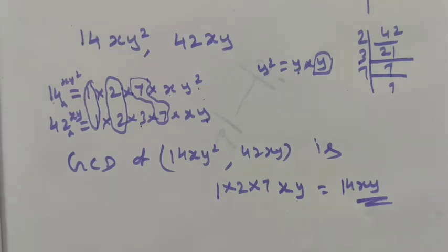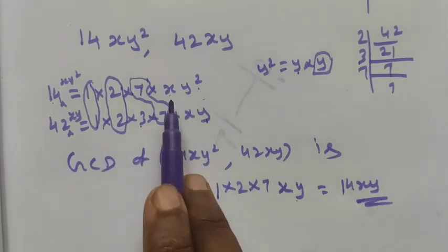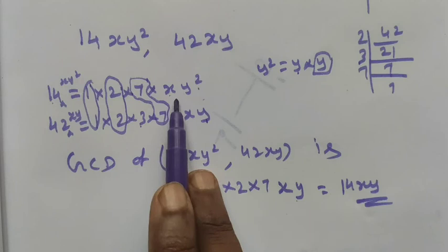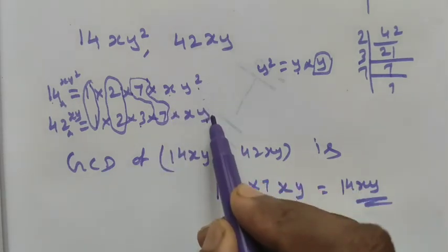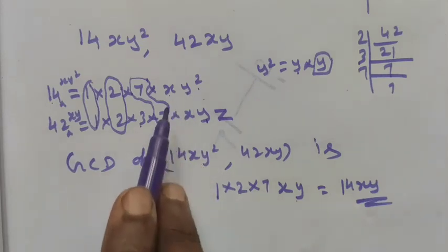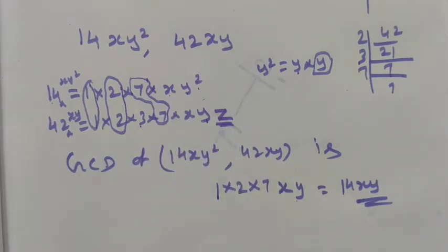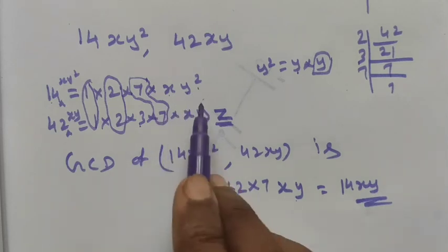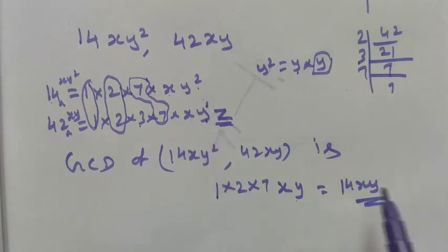So this term is equal to 14xy — the GCD of 14xy² and 42xy is 14xy. By this method, we factorize the numerical value separately, and for variables, we take only those common to both terms. If a variable like z is not present in both terms, we leave it out. We take all common elements with the least power — here y has power one and power two, so we choose the least power, y¹. That is the way to find the GCD. Thank you, students.